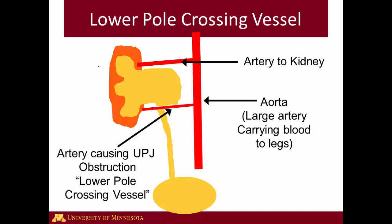The other cause of obstruction or blockage at the UPJ is a lower pole crossing vessel. This is essentially an artery that goes to the kidney from the aorta. This is the aorta, which is the large artery that carries blood from your heart through your abdomen down to your abdominal organs as well as to your legs. Most of the time there's one artery to the kidney. But in about 50% of people with UPJ obstruction and about 20% of people without UPJ obstruction, there's a second artery that comes down and goes to the lower part of the kidney. You can see it crosses the UPJ right here.